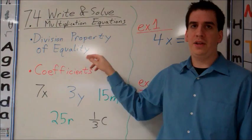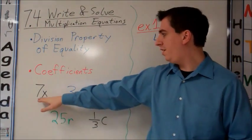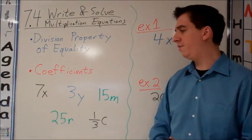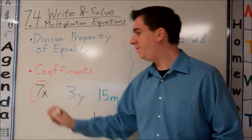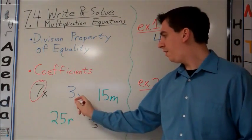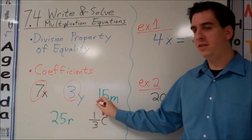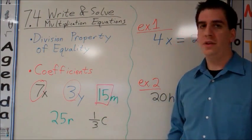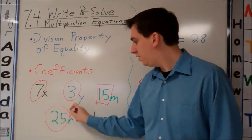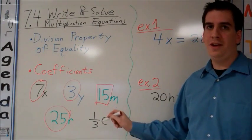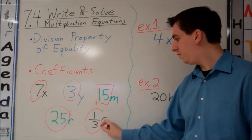We'll come back to the division property of equality later, but coefficients, remember this is the number that comes right next to a variable, right in front of the variable. So for 7x, our coefficient is 7, for 3y, our coefficient is 3, for 15m, the coefficient is 15, for 25r, the coefficient is 25, and for 1 third c, don't be confused by the fractions, the coefficient is just 1 third.